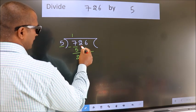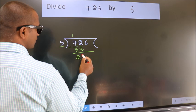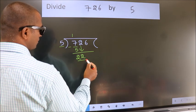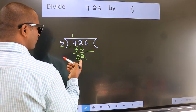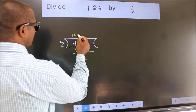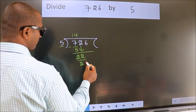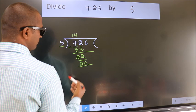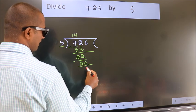After this, bring down the beside number. So, 2 down. So, 22. A number close to 22 in 5 table is 5 fourths 20. Now, we subtract. We get 2.